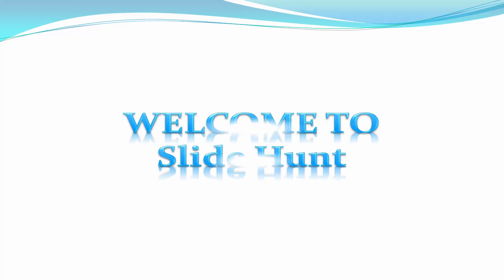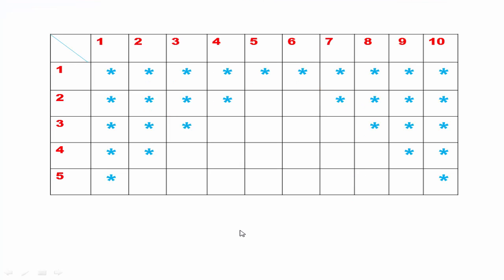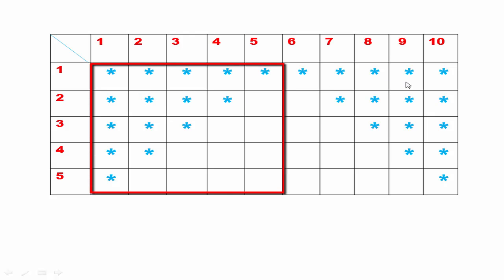Hello friends, welcome to Slide Hunt C programming video tutorial. In this tutorial we print some specific pattern using star or asterisk symbol. Here we will print this pattern — you can see stars are printed in decreasing order and some spaces are printed among the stars. We divide the whole screen into rows and columns. If you see the picture carefully, you will find two different patterns: one marked in red color and one marked in green color.